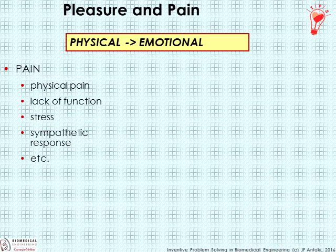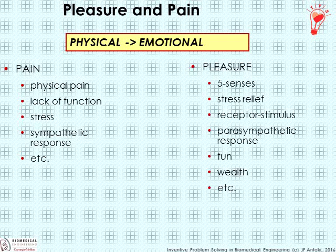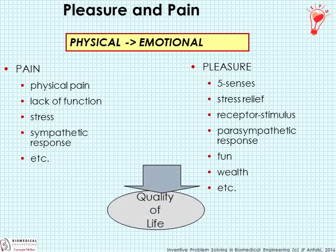Focusing on pleasure and pain — what do we mean by pain? There's obviously physical pain, and since we're in biomedical engineering, we're trying to alleviate suffering, restore function, alleviate physical and emotional stress. Pleasure refers to the five senses, relief of stress, endorphin or opiate-like receptor responses, and psychological types of pleasure such as wealth, power, and fame. In the parlance of biomedical engineering, we talk about quality of life.